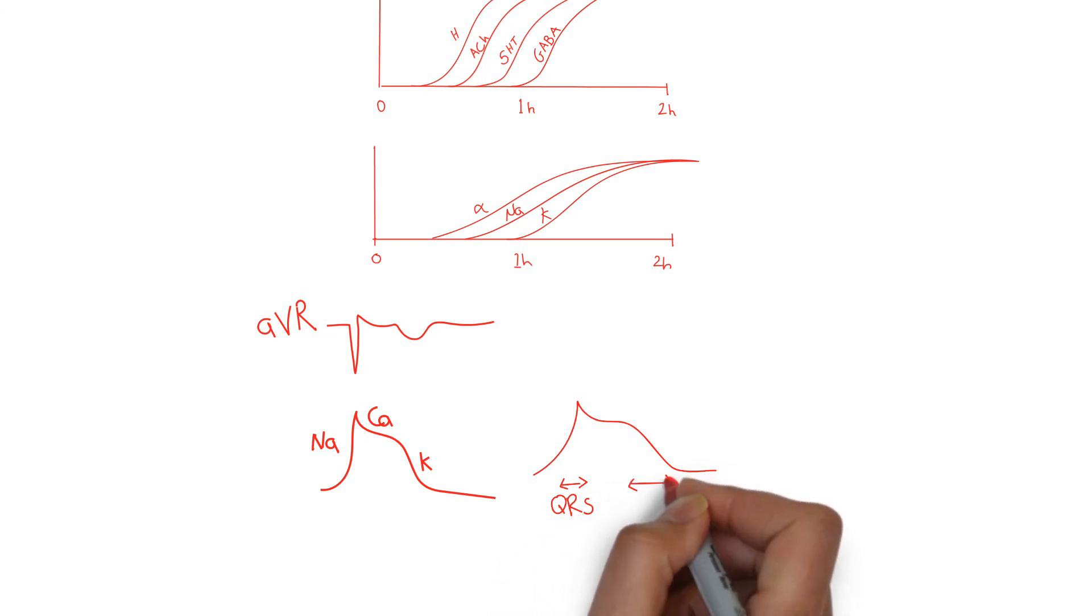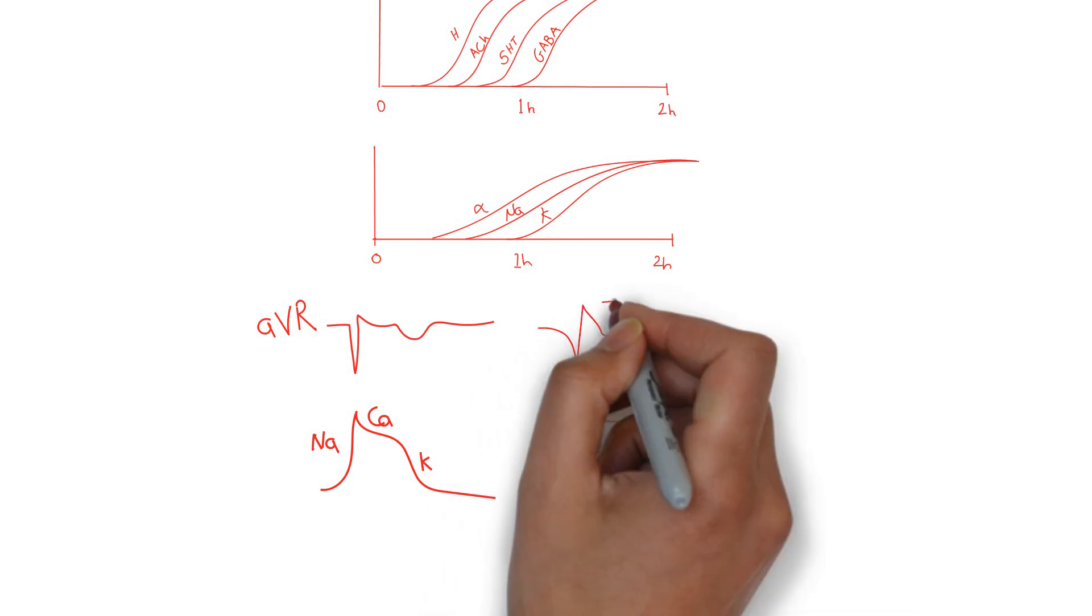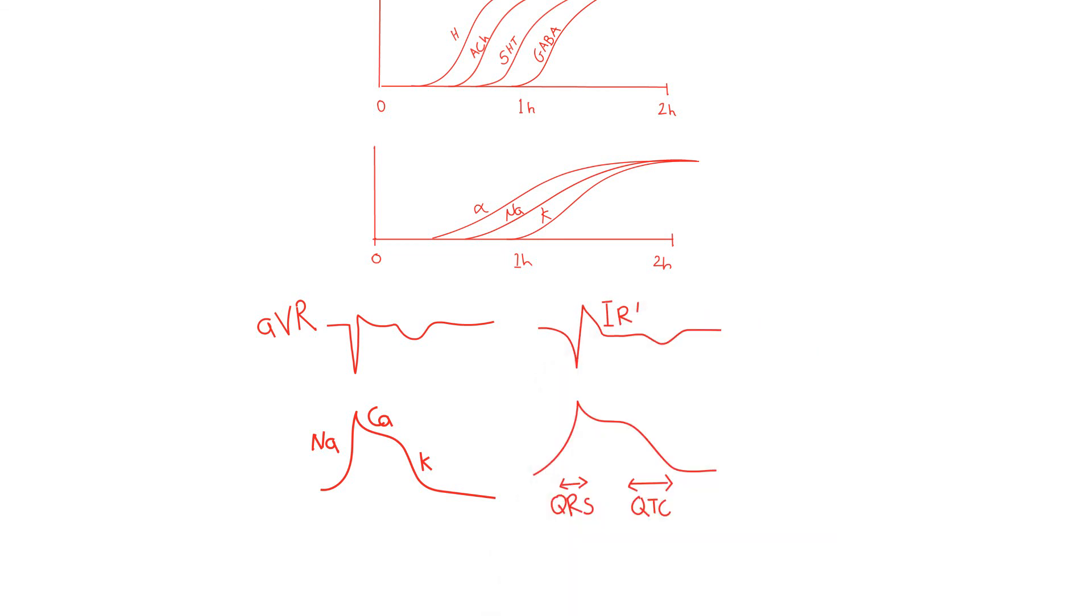Sodium channel blockade, therefore, generates a widened QRS, and potassium channel blockade generates a widened QTC. But there is another EKG finding that precedes QRS widening and QTC prolongation, and that is the terminal R wave in AVR.